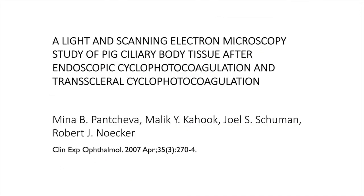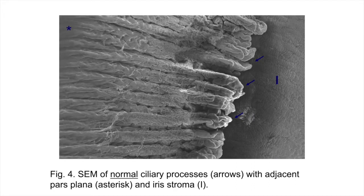We did some early studies on ECP years ago, looking at the differences between ECP and transcleral cyclophotocoagulation. This particular study was completed when I was at the University of Pittsburgh. This slide shows what normal ciliary processes look like. The arrows are pointing towards the tips of the ciliary processes. The eye indicates the iris, and the asterisk is positioned closer to the pars plana. What we're seeing here is normal architecture, and I want you to compare it to the subsequent two slides.